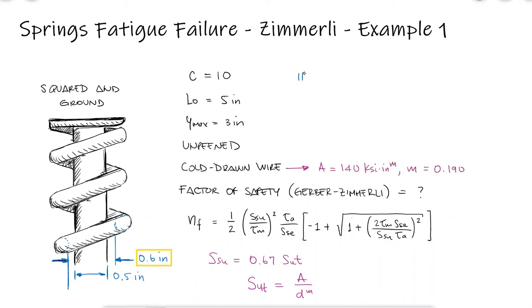If the inner diameter has to be 0.6 inches, and the coil diameter is 10 times the wire diameter, the wire diameter is 0.06 repeating inches. The ultimate strength is therefore 234.2 KSI.